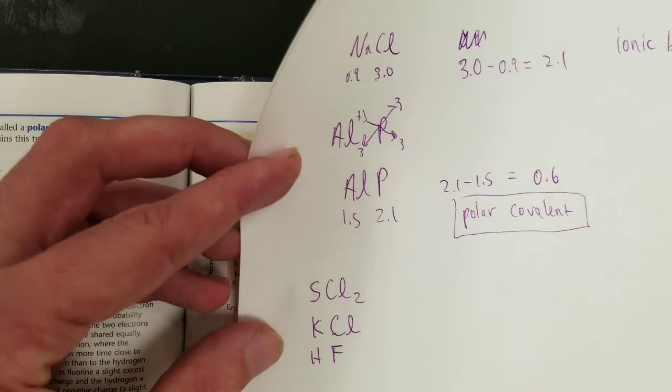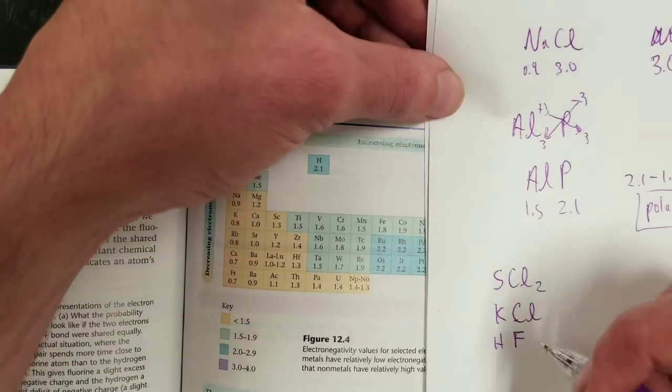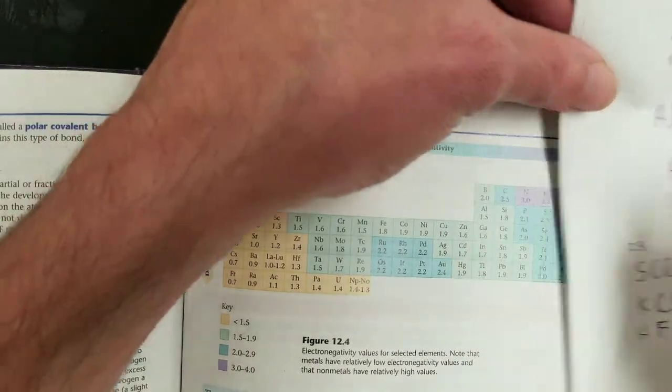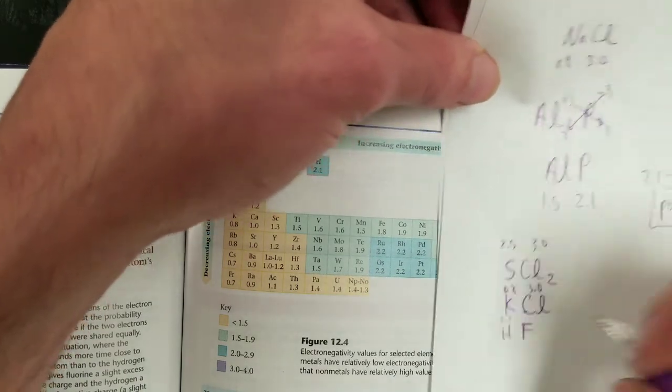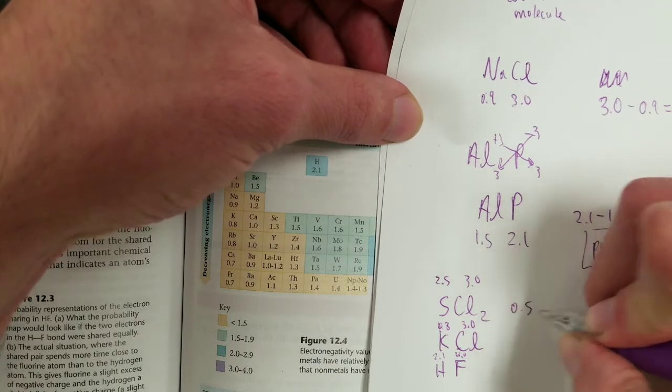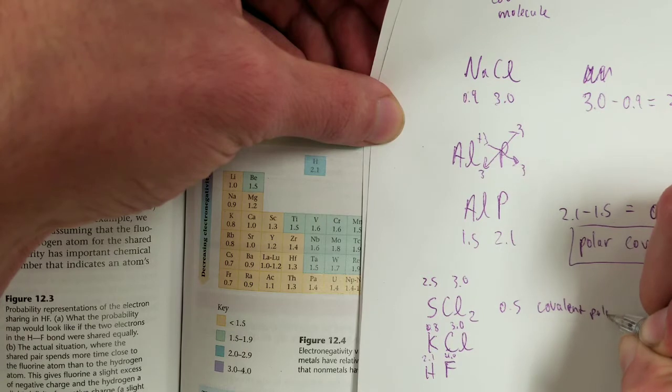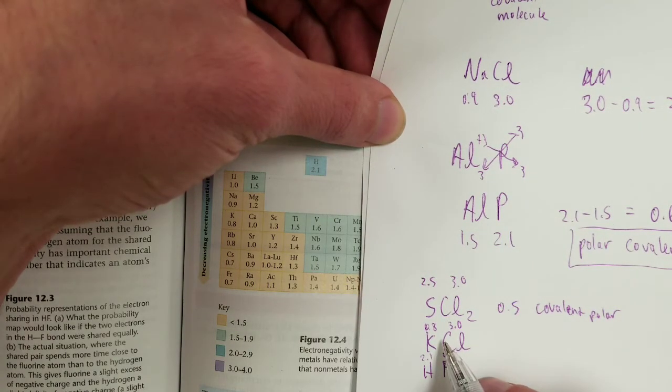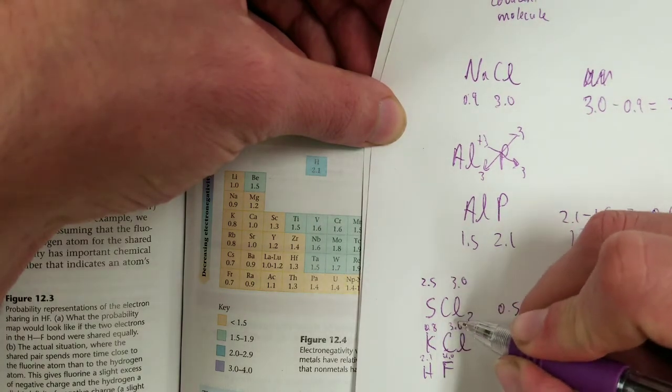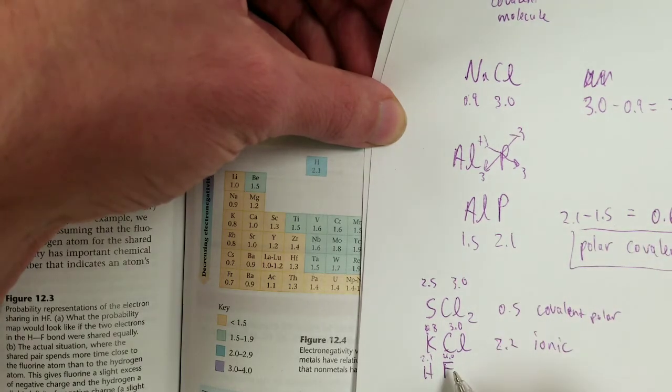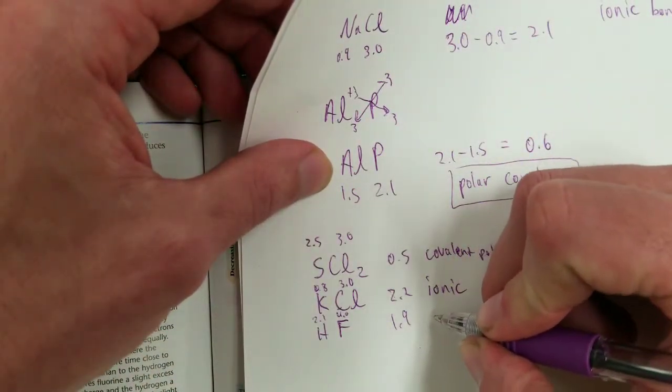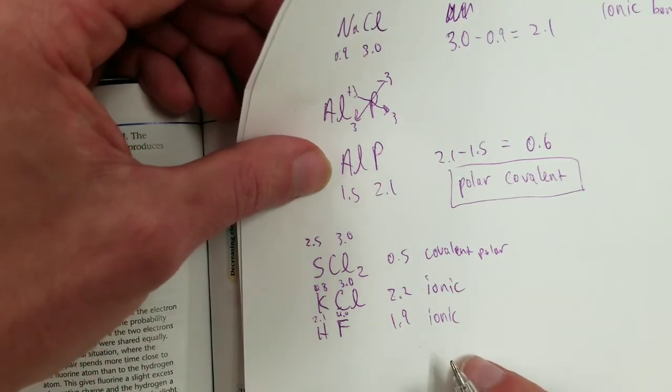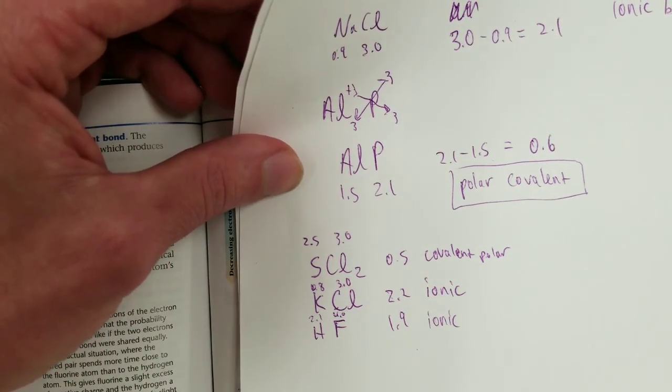All right. So, if you took the time to pause and practice, let's see. In the meantime, sulfur is 2.5. Chlorine is 3.0. So 3.0 here also. Potassium is 0.8. Hydrogen is 2.1. Fluorine is 4.0. So these have a difference of 0.5. This is covalent polar. These have a difference of 2.2. That minus that is 2.2. That's ionic. And this minus this, 4 minus 2.1. You have 4.0 minus 2.1 is a difference of 1.9. That's ionic. Weakly ionic, but ionic nonetheless. Even though you have two non-metals. It's an ionic thing.